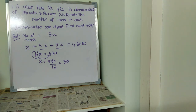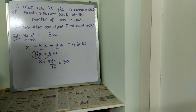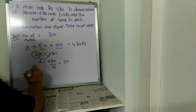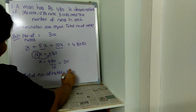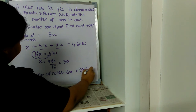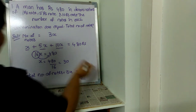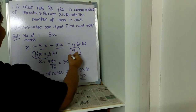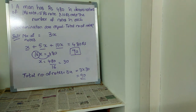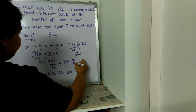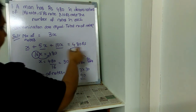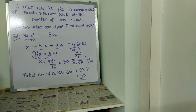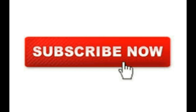Now the main question is asking us to find the total number of notes, which we denoted as 3x. The x value is 30, so the total is 3 × 30 = 90. The ultimate solution is 90. He has 90 notes in total — 30 one rupee notes, 30 five rupee notes, and 30 ten rupee notes, individually 30, 30, 30, all together 90.